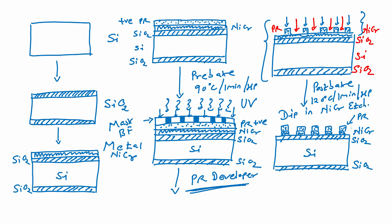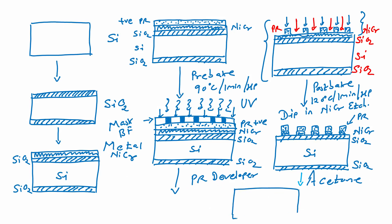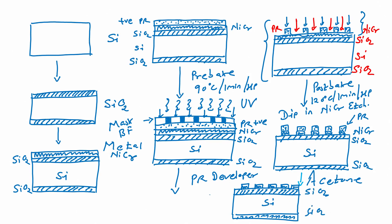The wafer is then dipped in acetone, which strips off the photoresist. This leaves a wafer with patterned nichrome on silicon dioxide on silicon — a fabricated micro heater.